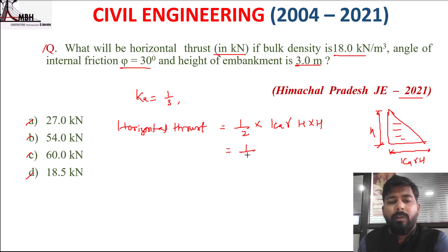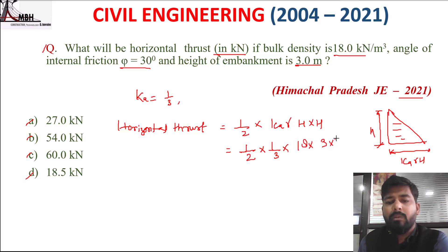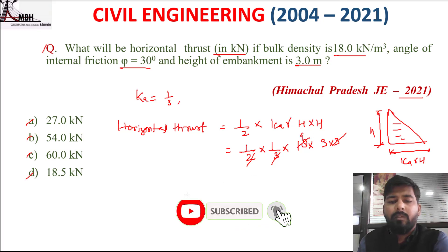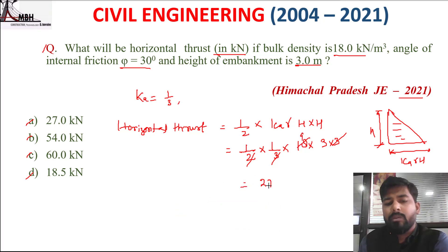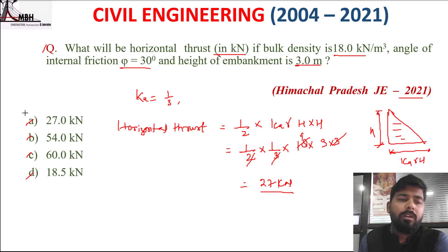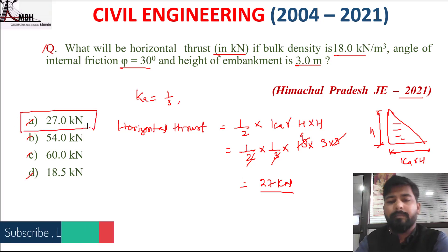Horizontal thrust = (1/2) × (1/3) × 18 × 3² = (1/2) × (1/3) × 18 × 9 = 27 kN. So the correct option is A, which is 27 kN.